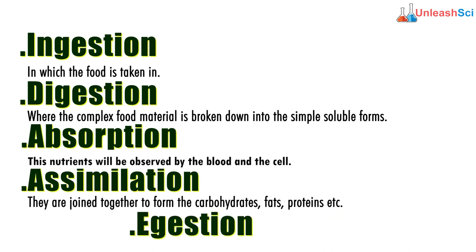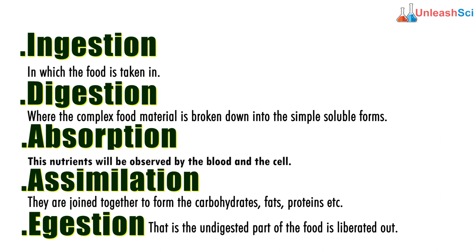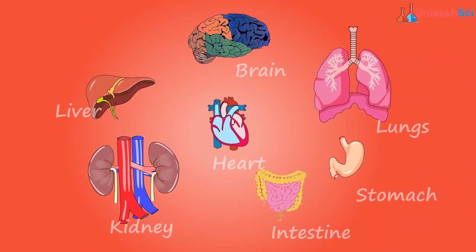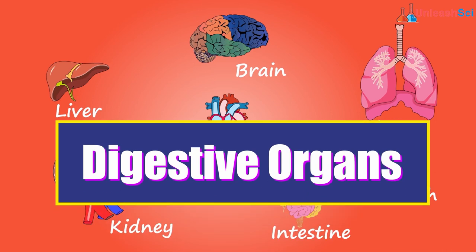Whatever is left behind, i.e. the undigested part of the food, is eliminated out during egestion. Now, talking about the human digestive system, the organs which participate in this process of digestion are termed as the digestive organs and they are present in the form of the alimentary canal.